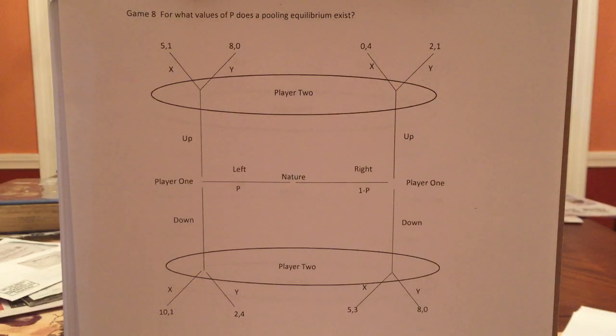And basically, I mean by this is the players know the value of P. We don't. And for what values of P does there exist a pooling equilibrium?